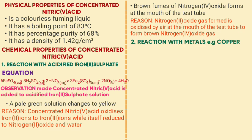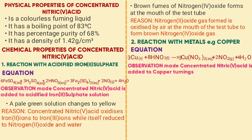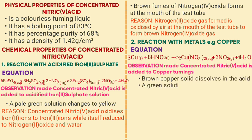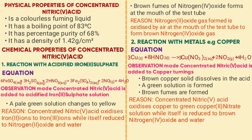Chemical property number two is the reaction with metals, for example copper. The equation is: 3Cu + 8HNO3 → 3Cu(NO3)2 + 2NO2 + 4H2O. Observations made when concentrated nitric acid is added to copper: the brown copper solid dissolves in the acid, a green solution is formed, and brown fumes are formed. The reason is that concentrated nitric acid oxidizes copper to copper nitrate solution while being reduced to nitrogen dioxide and water.